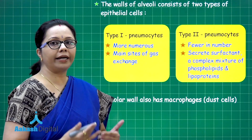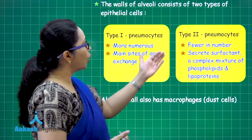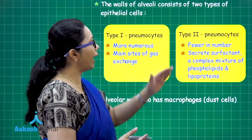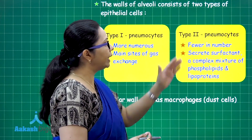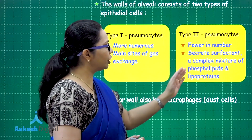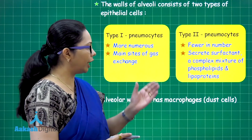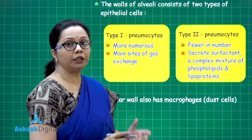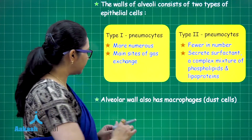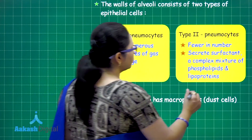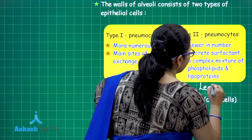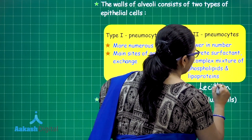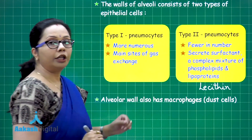Through Type 1 pneumocytes, oxygen and carbon dioxide are exchanged. Type 2 pneumocytes are fewer in number and secrete surfactant, which is a mixture of phospholipids and lipoproteins. The phospholipid present in surfactant is lecithin, and its purpose is to reduce surface tension.